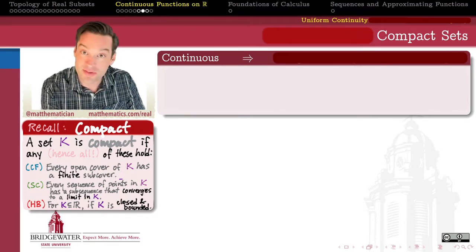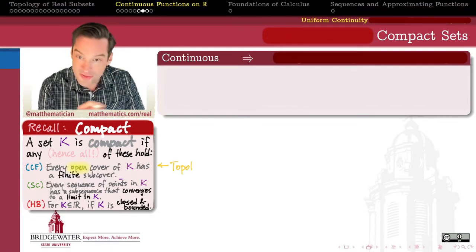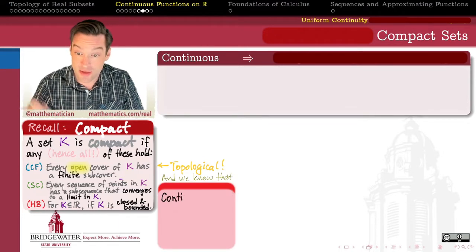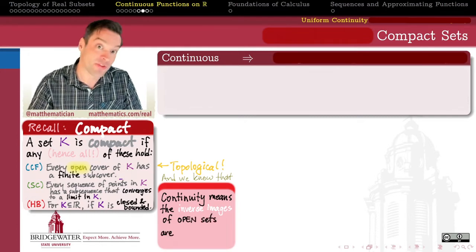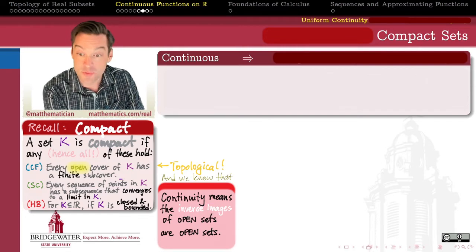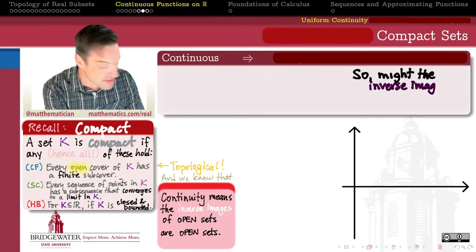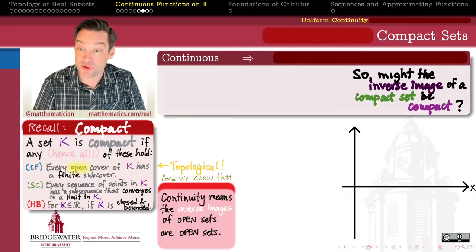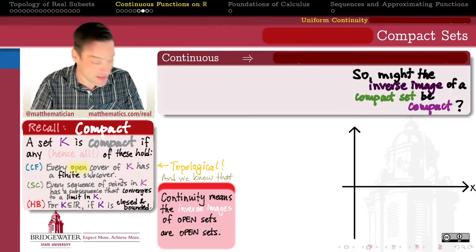And so, our question is, how do continuous functions interact with compact sets? Well, since compactness can be defined purely in terms of open sets and set theoretic definitions, that makes it something topological. And, we also know how continuous functions interact with open sets. Continuity means that the inverse images of open sets remain open. So, we might be led to conjecture that maybe it's true that the inverse image of a compact set is a compact set. Let's investigate that.